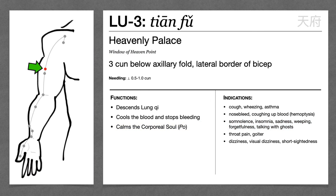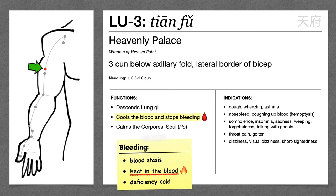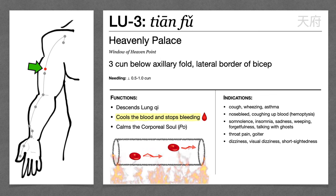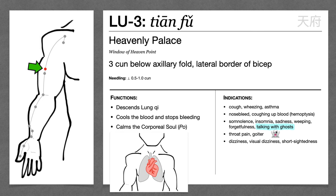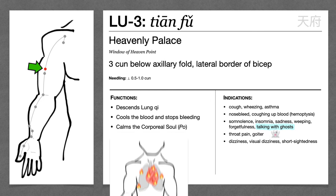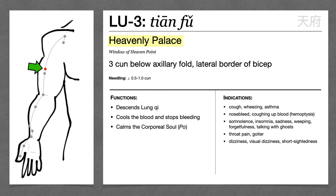Besides being a window of heaven point, Lung 3 cools the blood and stops bleeding. Heat is one of the causes of bleeding in Chinese medicine — heat causes things to speed up, so when heat gets into the blood, it can cause the blood to move recklessly outside of the vessels. So Lung 3 can treat things like nosebleed or coughing up blood. We also see the indication of talking with ghosts or crying ghost talk. On one hand, we could relate this to the fact that Lung 3 treats psycho-emotional disorders and calms the corporeal soul. On the other hand, this is sometimes thought to refer to delirious speech during end-stage pulmonary tuberculosis — a condition where heat in the lung is beginning to disturb the shen.